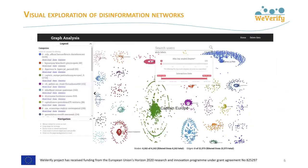A web-based UI for visualizing disinformation communities and information flows is created. It visualizes a network centered around the user-selected account. Different colors of nodes and edges in the graph are used to represent different communities that have been identified automatically. Disinformation networks can be restricted to a specific time period, and thus one can observe changes and evolution over time.